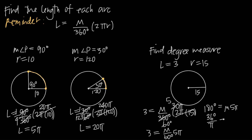So we end up with 36 degrees over π, and that's going to be equal to the degree measure of the arc. We'll leave it in terms of π, but if you do the math, 36 degrees divided by π gives you about 11 and a half — so roughly 11.5 degrees is the degree measure of the arc.